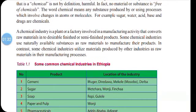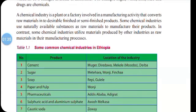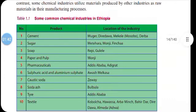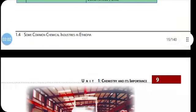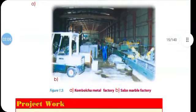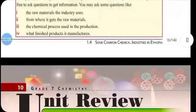Here are some common chemical industries in Ethiopia. The first one is cement, located in Mugur, Dire Dawa, Maghala, and Darba. Sugar industries are in Metahara, Wenji, and Fincha. Soap industries are in Repi and Gulale. Paper and pulp in Wenji. Pharmaceuticals in Addis Ababa and Adigrat. Sulphuric acid and ammonium sulphate in Awash Melkasa. Caustic soda in Ziway. Soda ash in Bulbula. Tyre in Addis Ababa. Textile in Kombolcha, Hawassa, Arbaminch, Bahir Dar, Dire Dawa, and in Almeda.